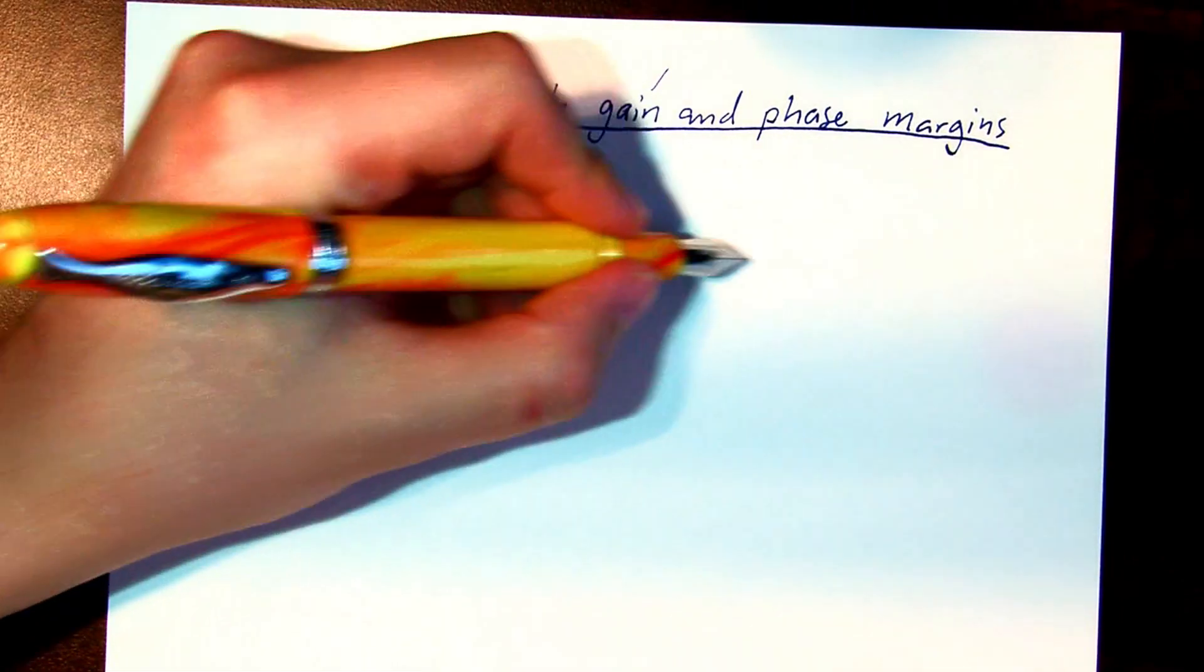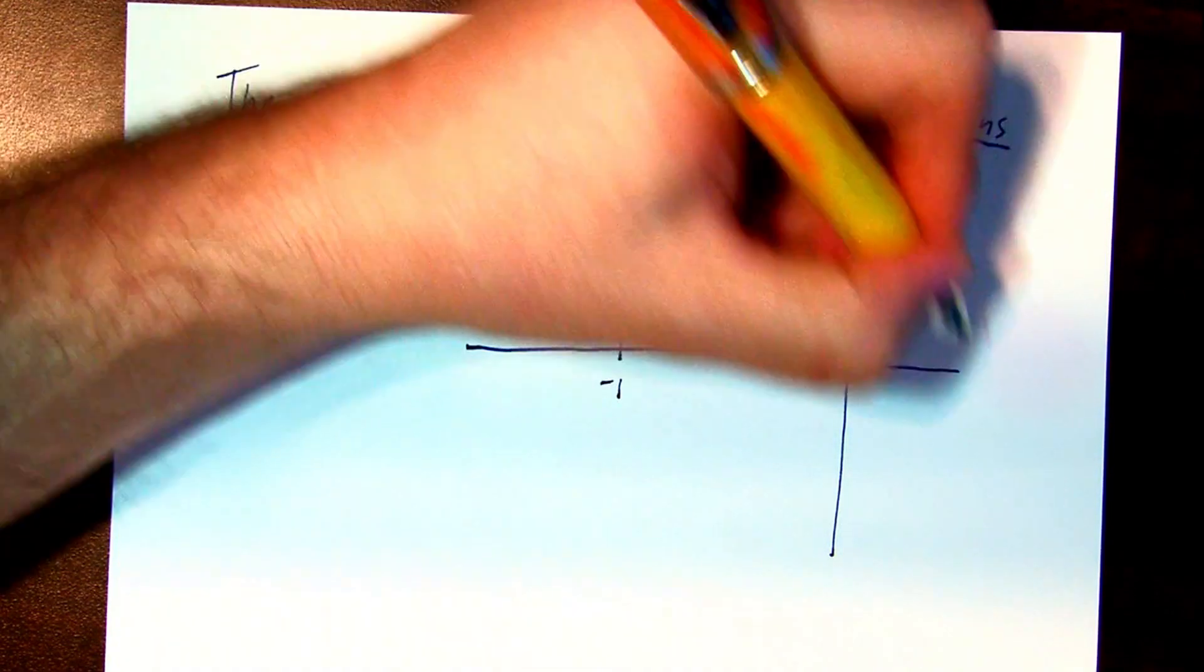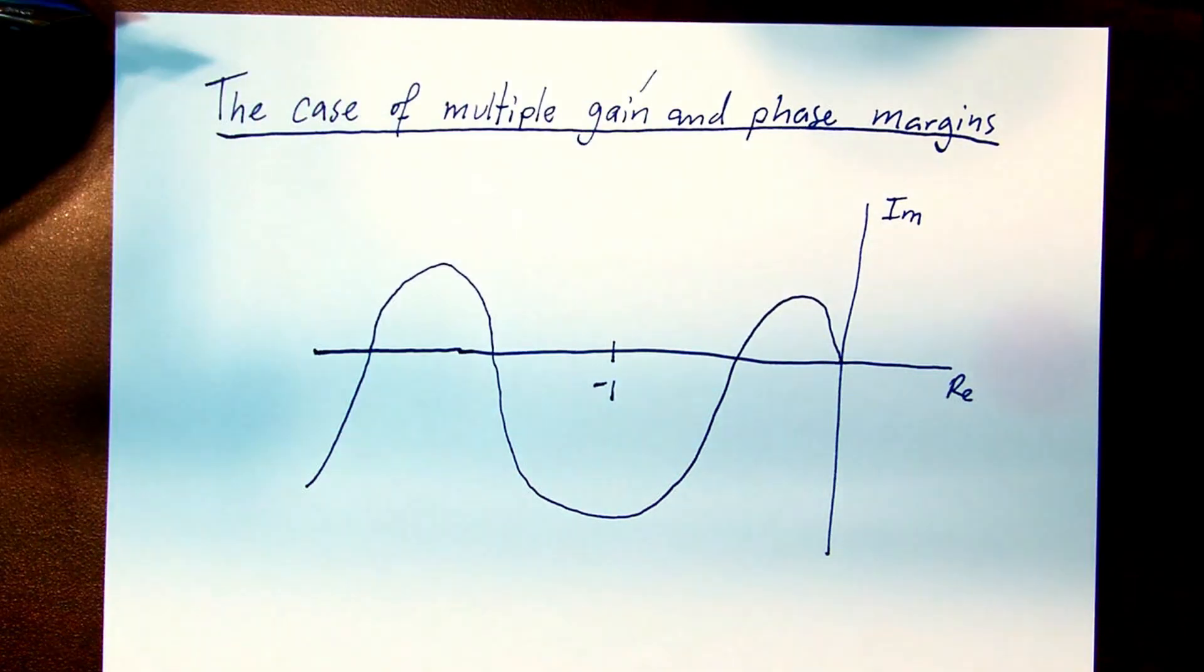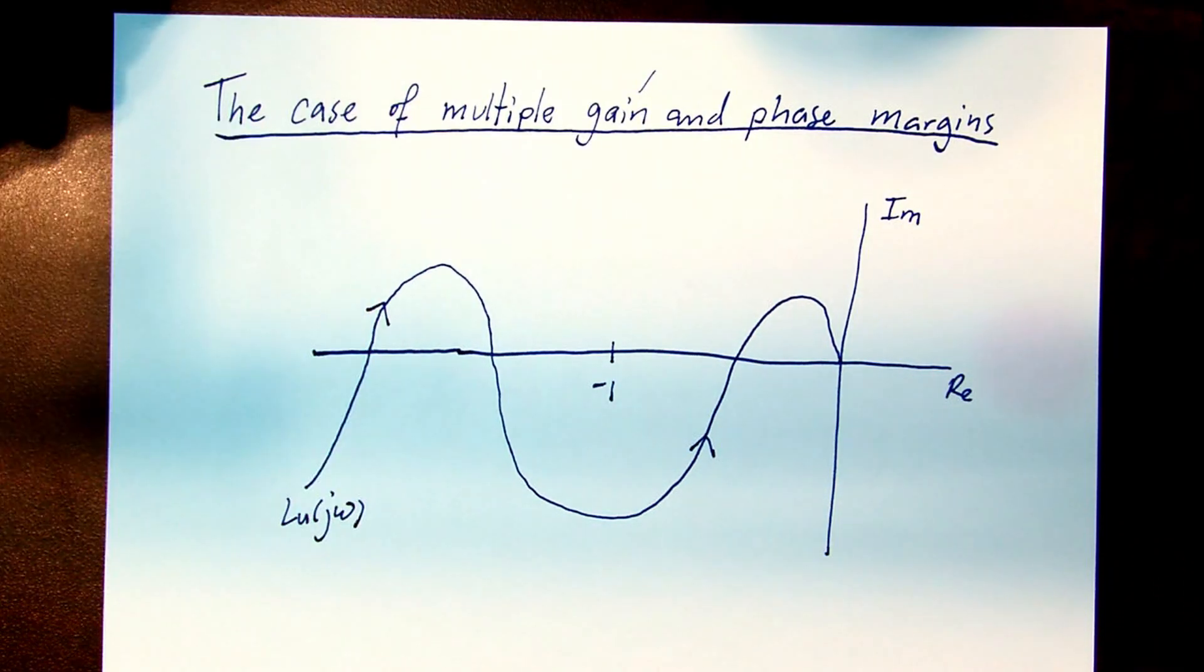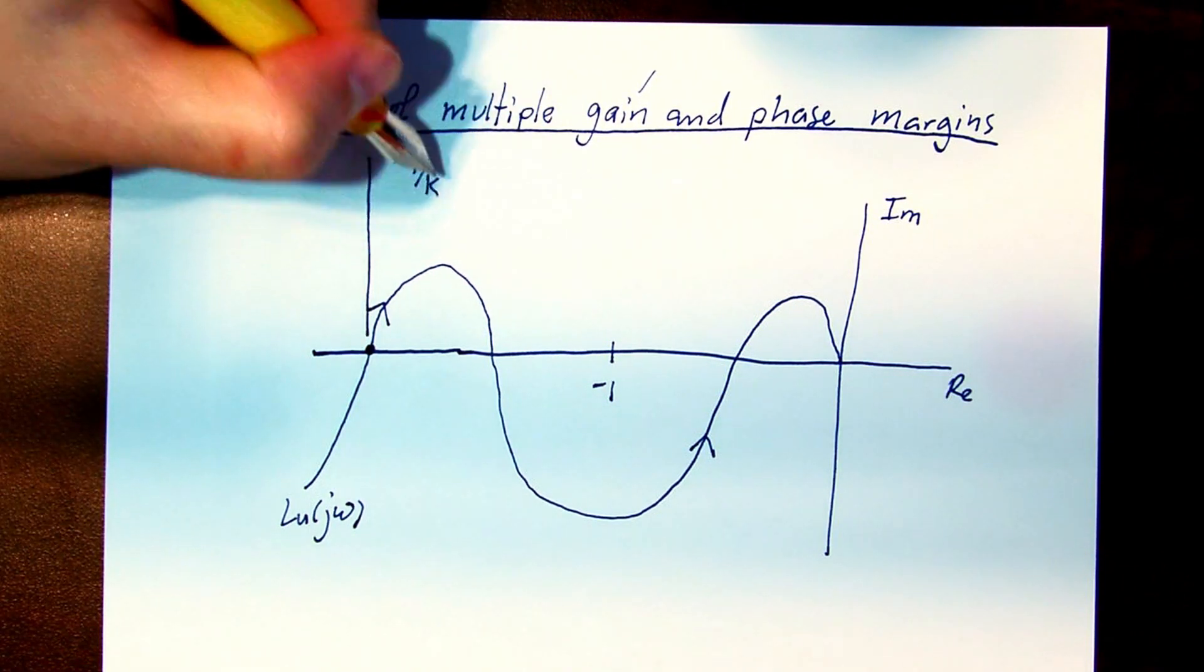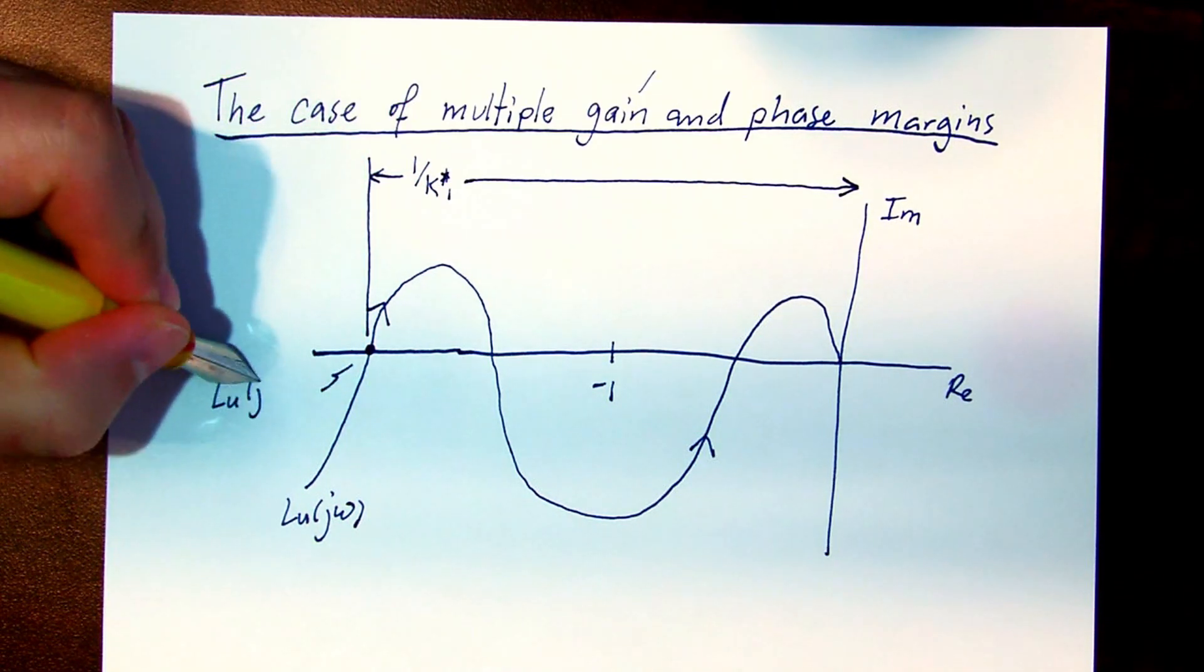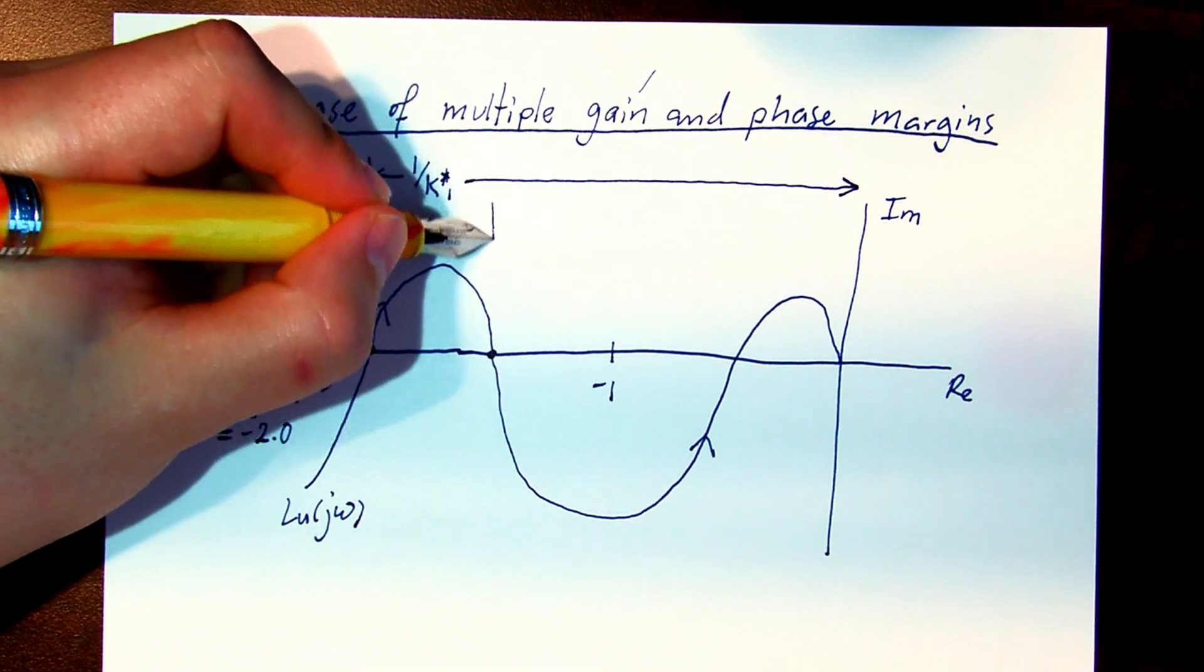Let's first consider the case of multiple gain margins. Here's a hypothetical loop gain which crosses the negative real axis at three locations. The first, at the lowest frequency, gives a gain margin k star 1, we'll denote, at frequency omega 1, where the loop gain has a value of minus 2.